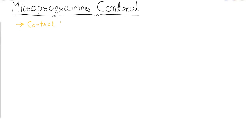In this unit, we are going to discuss the following topics: control memory, address sequencing, microprogram example, microprogram control, and lastly, design of control unit.